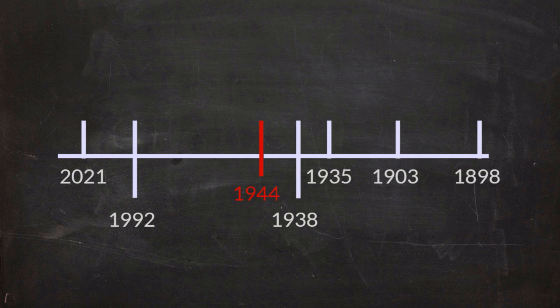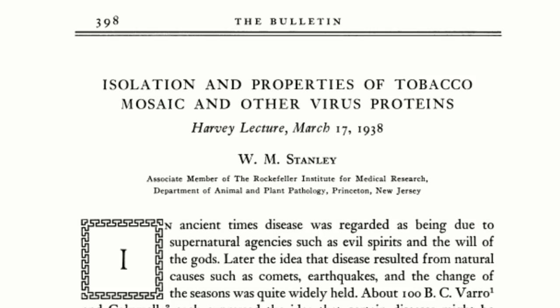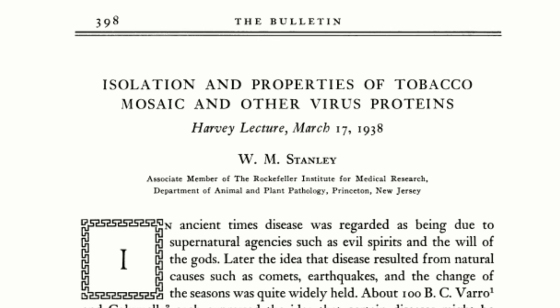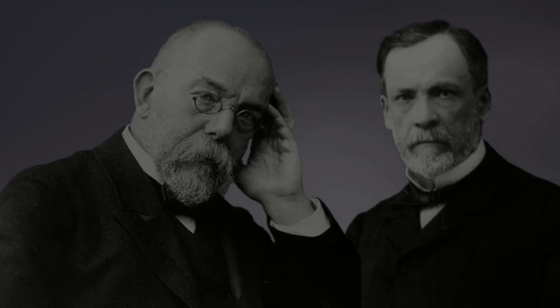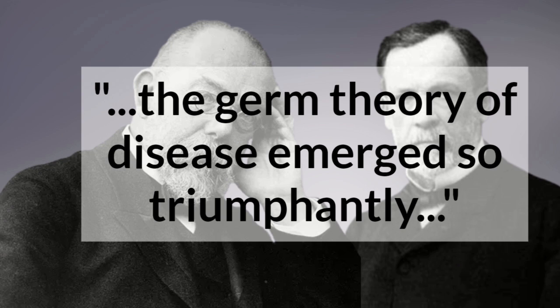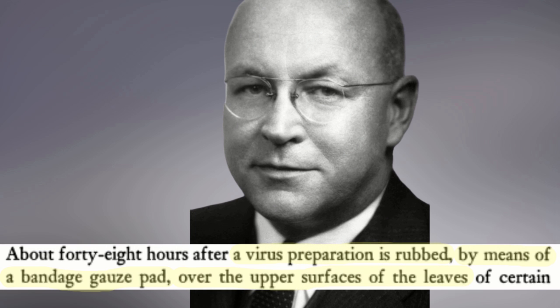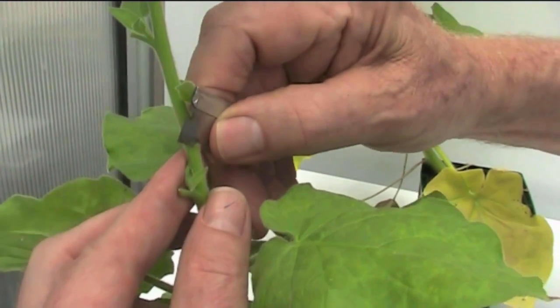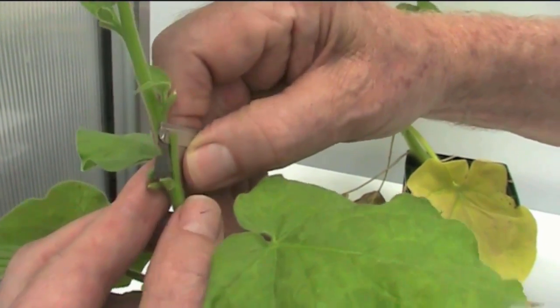So we're still not getting to the definitive evidence we need for a virus, and the next jump back on our timeline is to 1938, to Wendell Stanley once again, who delivered a presentation titled 'Isolation and Properties of Tobacco Mosaic and Other Virus Proteins.' He opened by stating that the germ theory of disease emerged so triumphantly, based on the allegedly brilliant research of individuals such as Pasteur and Koch. Stanley went on to report that the alleged virus was shown to spread through the following technique: a virus preparation is rubbed by means of a bandaged gauze pad over upper surfaces of the leaves. This is the so-called mechanical inoculation technique, and already we can see some problems.